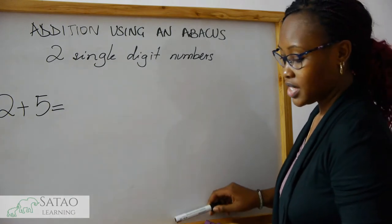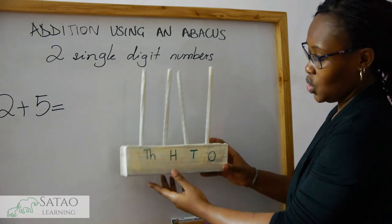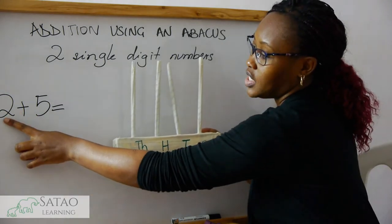Both of these are ones, so we are going to use the ones column. What do we do? We first take two beads.